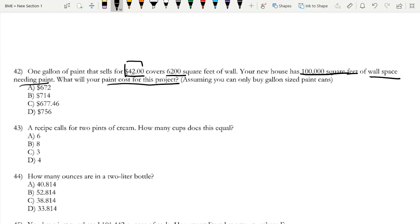So one gallon of paint sells for $42 and it covers 6,200 square feet of wall. The total number of gallons of paint that we will need is 100,000 over 6,200. So let's calculate that. 100,000 divided by 6,200, this equals 16.1.